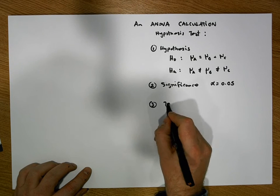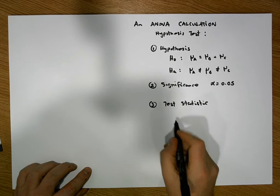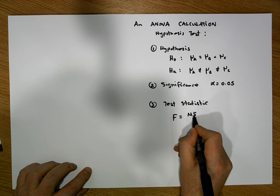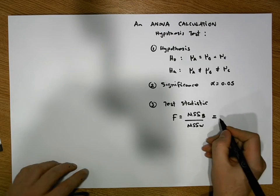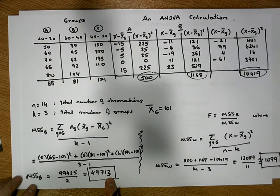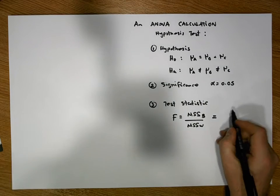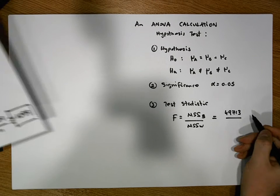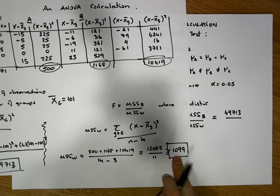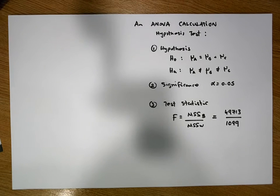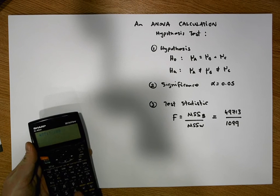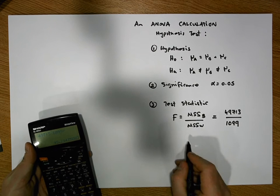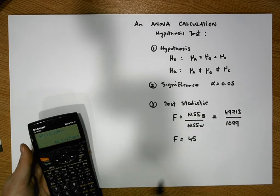Step three is our test statistic. The test statistic is F equal to the mean sum of squares between measure divided by the mean sum of squares within measure. We've calculated them on the previous page: the mean sum of squares between is 49,713 divided by the mean sum of squares within which is 1,099. This gives a test statistic of approximately 45 — quite a large test statistic.